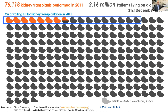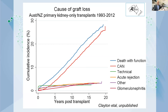When we look at transplantation around the globe, this snapshot taken in 2011 by one of my post-doctorate students Sarah White showed that at that stage there were over 2 million people sustained by chronic dialysis, of whom only the people in the blue rectangle made it onto a transplant waiting list, and only 76,000 received a kidney transplant in that year. Clearly the need for kidneys for transplantation greatly exceeds the supply, and this is the same I'm sure in Chile.